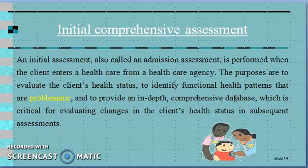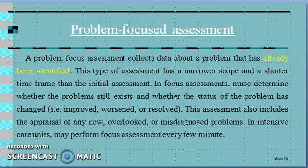We perform the patient's head-to-toe assessment according to functional health patterns — all 11 functional health patterns — identifying the problematic areas. Now you have baseline data. In the next assessment, you can compare with the patient's problem to determine whether it has been resolved or not. So we call it initial and comprehensive. It is time-taking because we do a whole examination of each system.